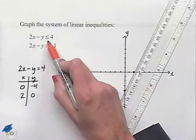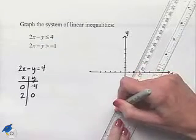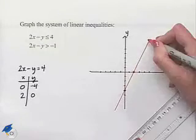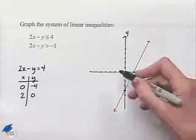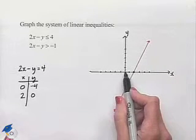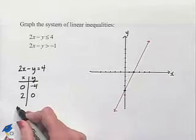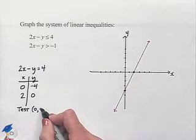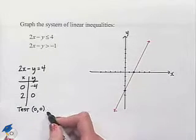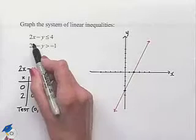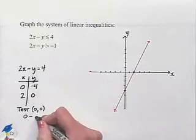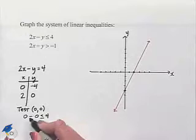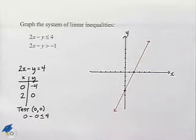Notice that in our inequality, 2x minus y is less than or equal to 4 — this is not a strict inequality — so we're going to draw this as a solid line. Next we need to test a point to determine which side to shade. We'll test the origin by substituting x equals 0 and y equals 0: 2 times 0 minus 0 is less than or equal to 4.